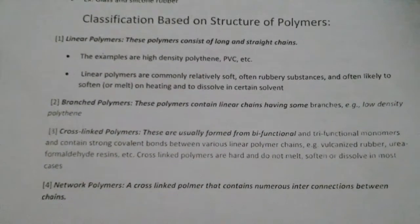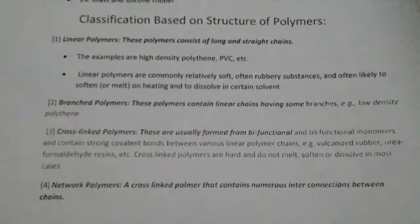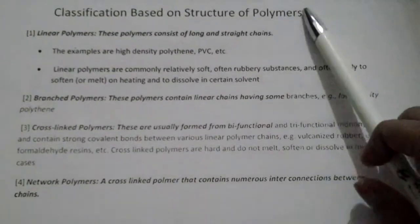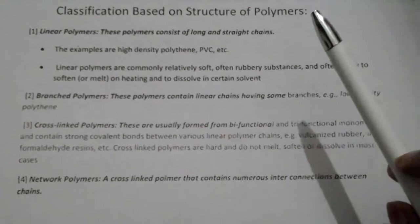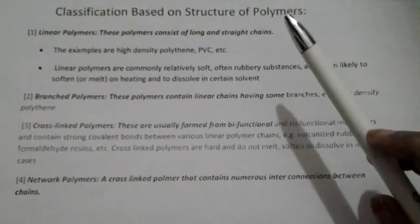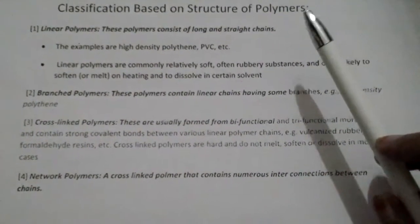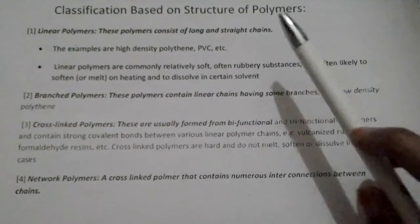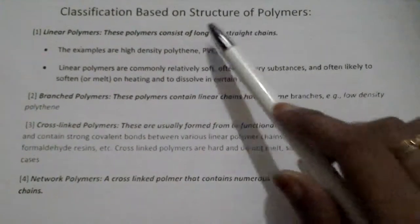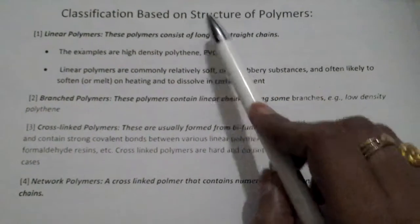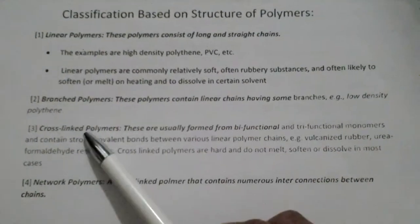Hello friends, welcome back. In this video we will see the classification based on structure of polymers. In the previous video we have seen the classification based on source and backbone of polymer chain. Now we will see the third one — based on structure of polymers, these are classified into linear, branched, cross-linked, and network polymers.